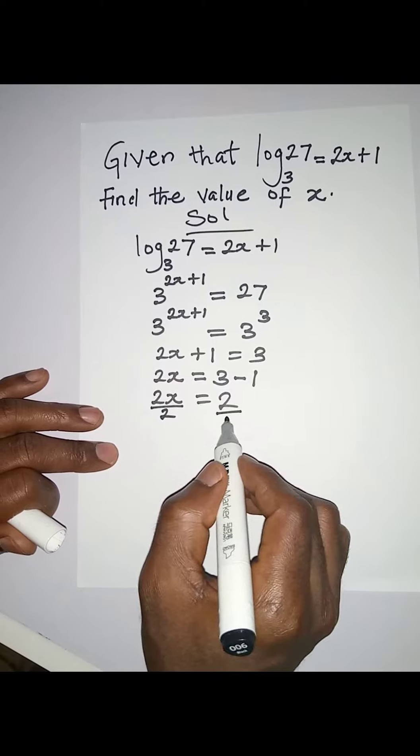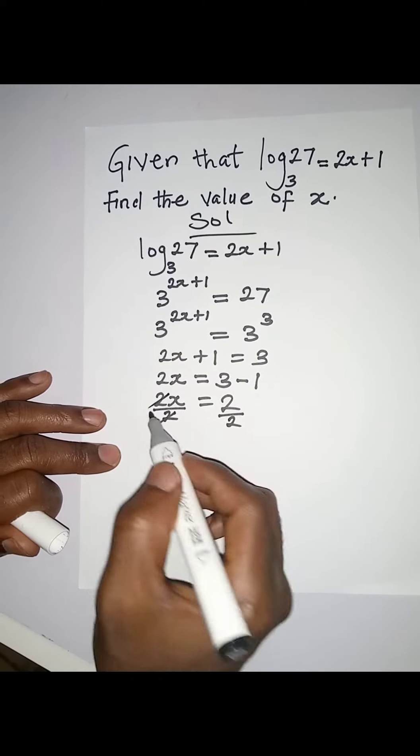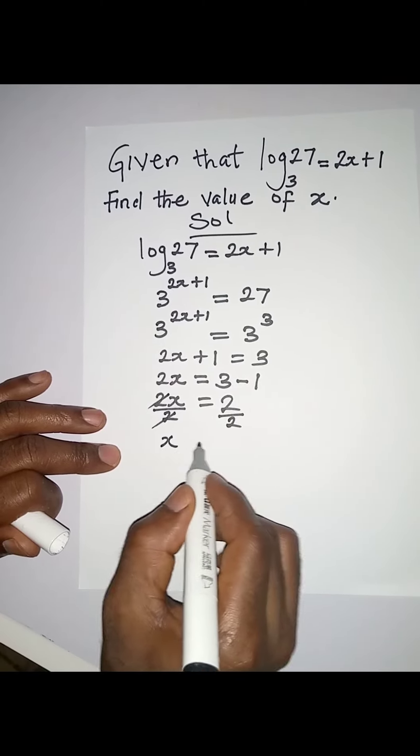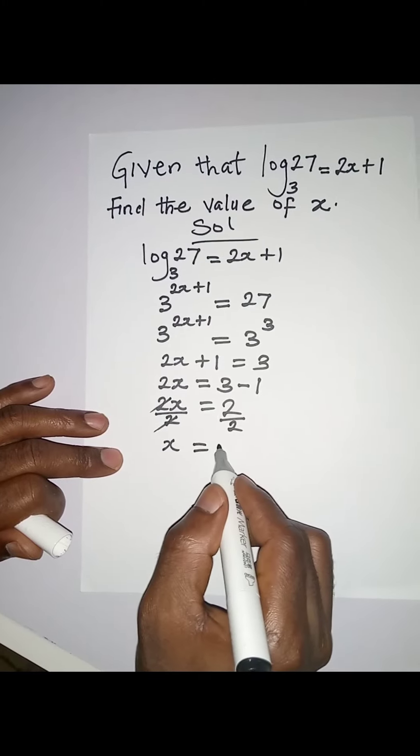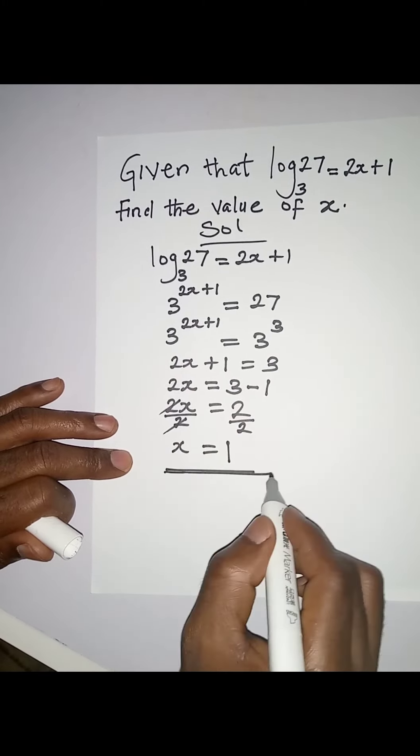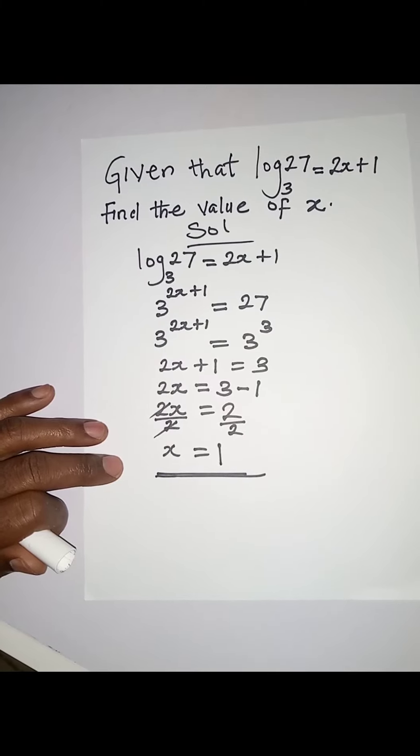2 can cancel 2, right? And then x = 2/2, which is equal to 1. So this is the value of x in the equation.